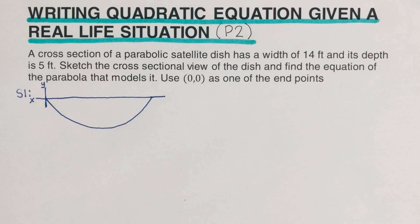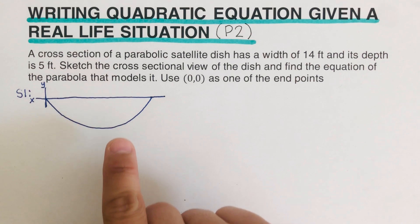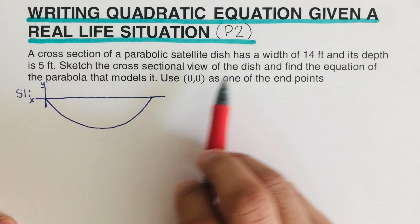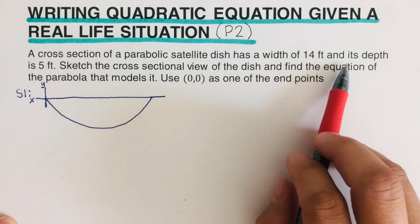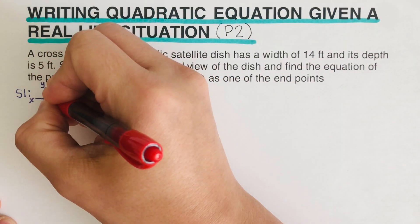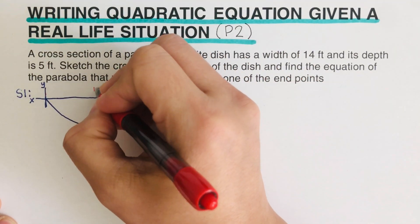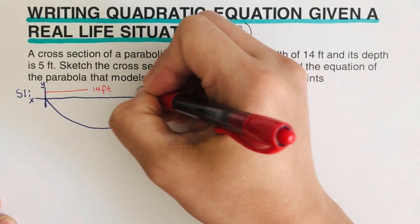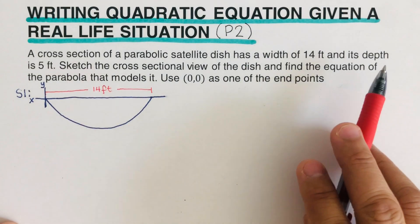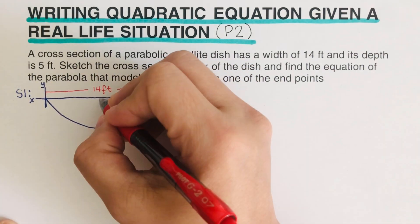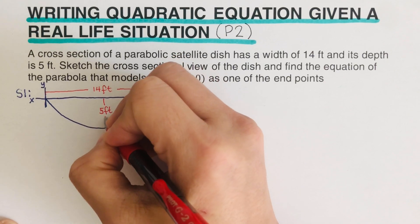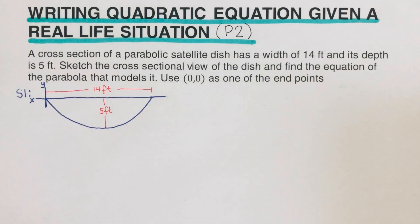After drawing the parabola, we label its dimensions. The width of the dish is 14 feet — that's from one end all the way to the other end. The depth of the dish is 5 feet, so we label that as well.